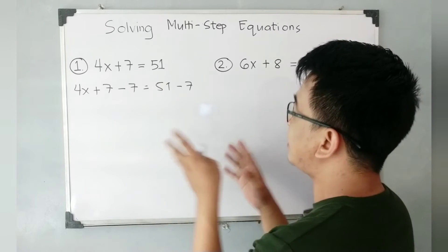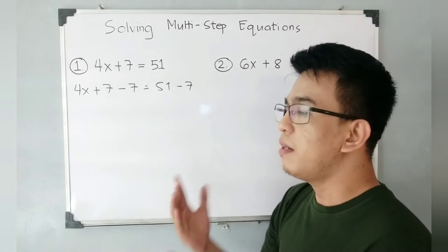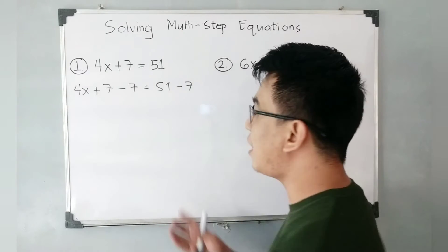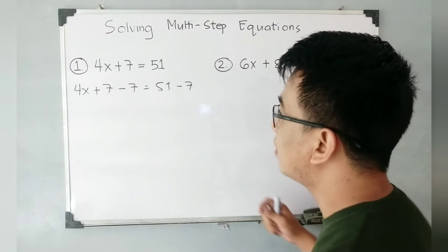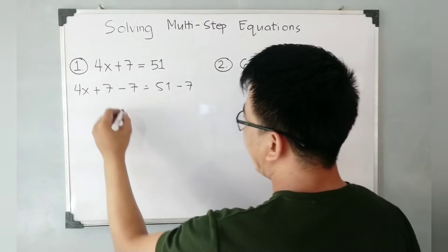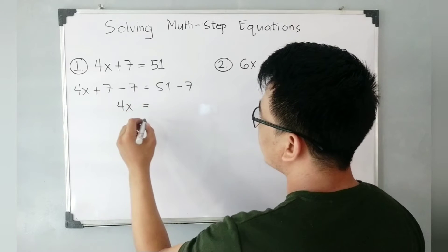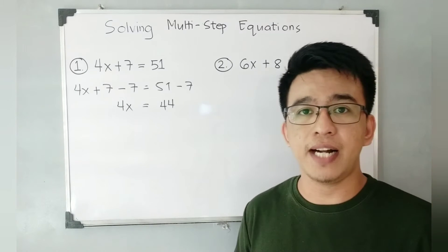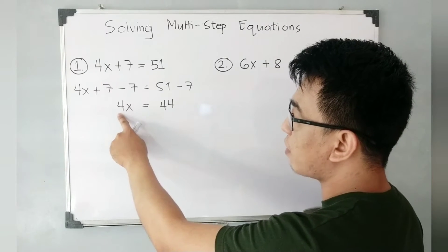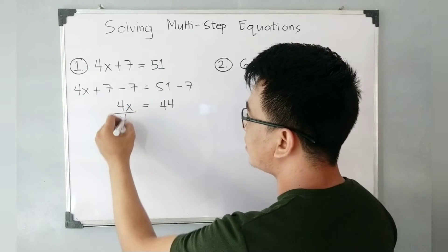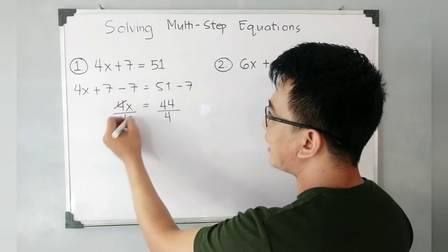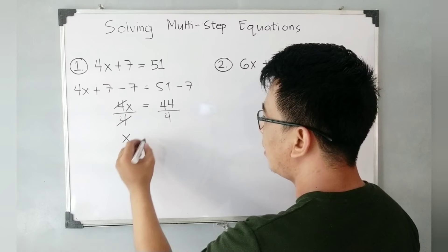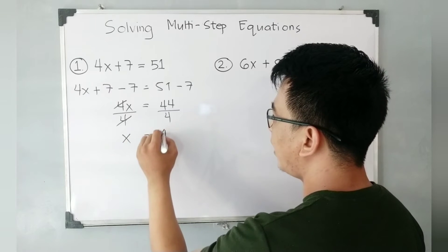Why do we need to subtract 7 on the other side of the equation? Because we need to make it balanced — whatever we do on the left side, we do the same on the right side. So 7 minus 7 is 0, giving us 4x is equal to 44. Our target is to solve for the value of x, meaning we need to eliminate 4 by dividing both sides by 4. That gives us x is equal to 44 divided by 4, which is 11.